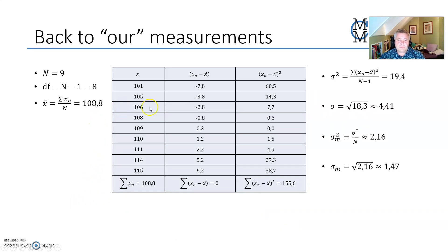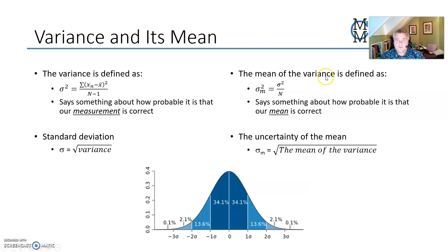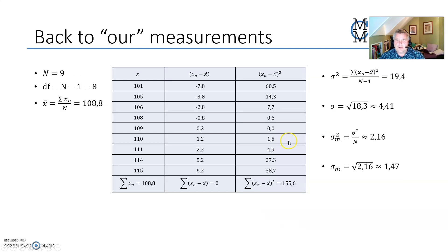Back to our measurements. If we have our measurements here, the deviation from our mean x-bar is shown, the deviation squared is shown, the variance is here, the standard deviation is here, the mean of the variance is here, and the uncertainty of the mean is here.